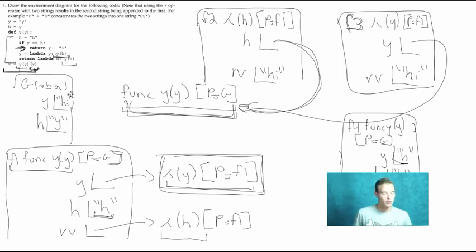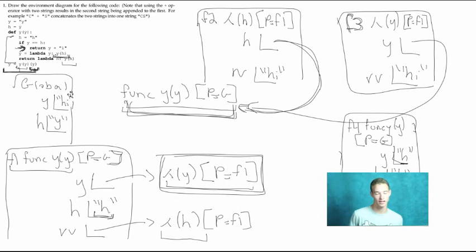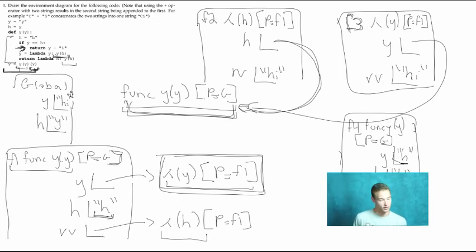The trick with these is really just going through each line very precisely and systematically. They're not difficult to do, but they can get confusing if you aren't using your environment diagram to help you look up where values are coming from. Don't try to keep all of this organized in your head — use your environment diagram in progress to look up values along the way. If you have any questions, ask on Piazza or come to tutoring. Thanks for watching — take care.